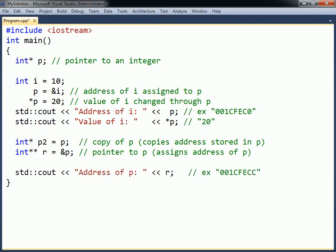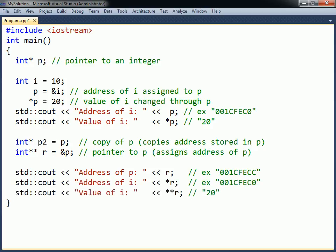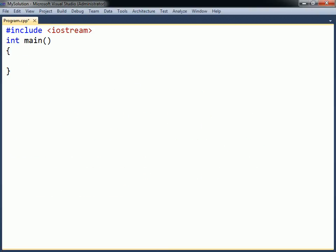Referencing the second pointer gives the address of the first pointer. Dereferencing the second pointer gives the address of the variable, and dereferencing it again gives the value of the variable. One of the main usages of pointers is to allocate memory during runtime, called dynamic allocation.